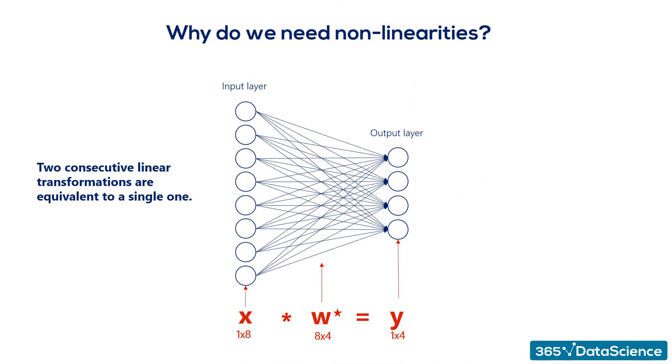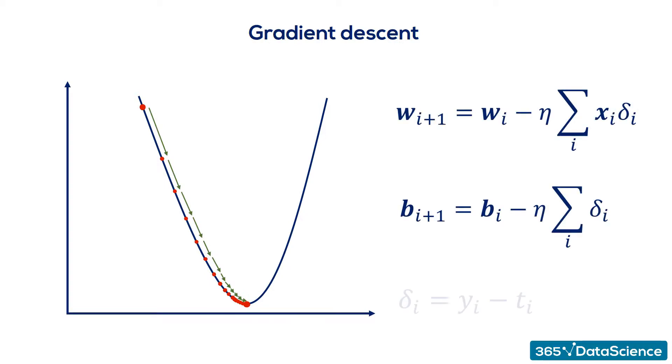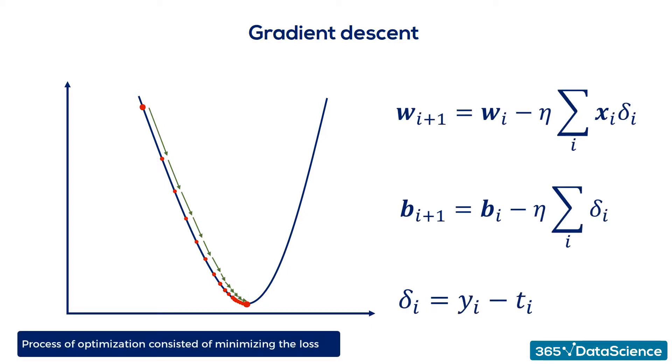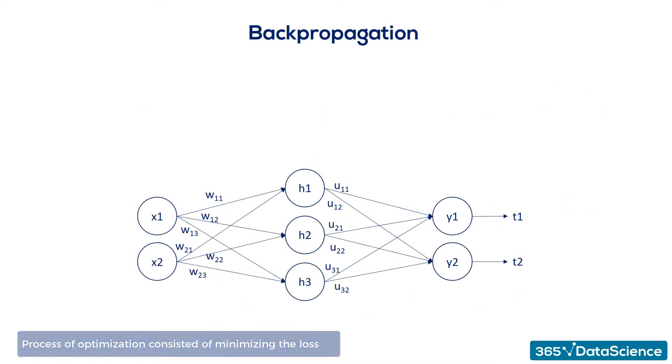By now, we have said a hundred times that the training process consists of updating parameters through the gradient descent for optimizing the objective function. In supervised learning, the process of optimization consisted of minimizing the loss. Our updates were directly related to the partial derivatives of the loss and indirectly related to the errors, or deltas as we called them.